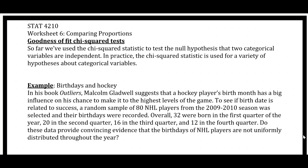Let's look at an example. In his book Outliers, Malcolm Gladwell suggests that a hockey player's birth month has a big influence on his chance to make it to the highest levels of the game. To see if birthday is related to success, a random sample of 80 NHL players from the 2009-2010 season was selected and their birthdays were recorded. Overall, 32 of those 80 players were born in the first quarter of the year, 20 in the second quarter, 16 in the third quarter, and 12 in the fourth quarter.